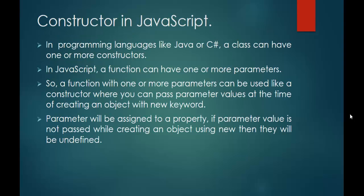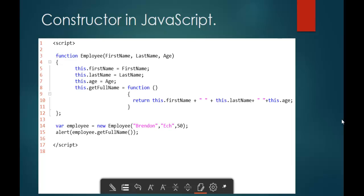In programming languages like Java or C Sharp, a class can have one or more constructors. But in JavaScript, a function can have one or more parameters. A function with one or more parameters can be used like a constructor, because we can pass parameter values at the time of creating an object with a new keyword. To understand this very clearly, let me jump into the next slide where I have a code snippet.